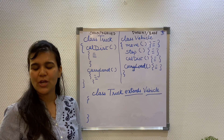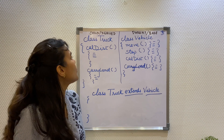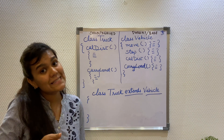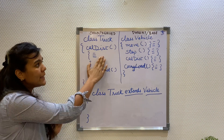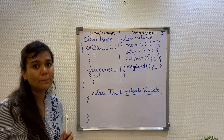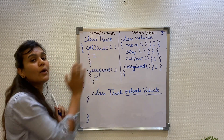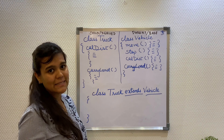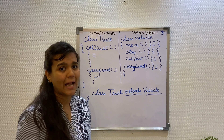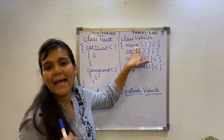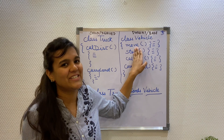Hence, I can conclude that inheritance provides us the functionality of extending the functionalities from the base class into the child class. So calculate distance can have its own implementation and carry load can have its own implementation in the truck class while still having their implementations in the vehicle class. Also, if I want to change the functionality of my move method, I can simply do it in my vehicle class and it will magically appear in all my child classes.